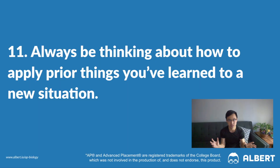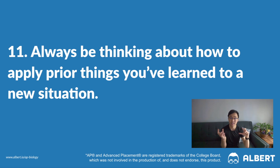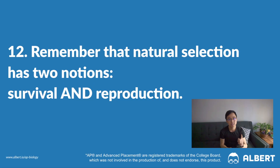Tip 11: always be thinking about how to apply prior things you've learned to a new situation. The College Board is notorious for asking AP Bio questions that cover something you've never directly learned in class, but they require you to demonstrate that you understand one or two concepts you've previously had exposure to and can apply them to a new situation. This was a very common mistake on the 2019 AP Biology exam, question one, where students missed points for not applying changes in molecular processes to ecological relationships. Tip number 12: remember that natural selection involves two parts — survival and reproduction. Most students only write about survival and forget about reproduction, which is a commonly missed point.